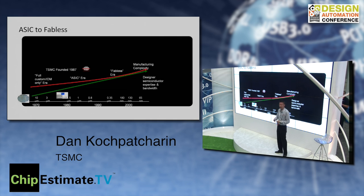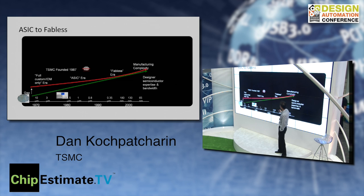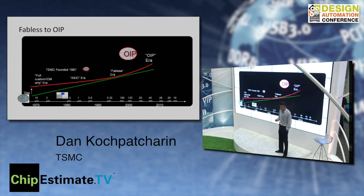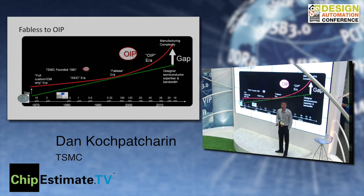You look at the gaps — big gaps required custom design, small gaps you could do yourself. But starting from 40 nanometers, manufacturing complexity got more and more difficult. You have double patterning, 3D extraction, and FinFETs, which are getting more and more difficult at 16 nanometer. This is what we call the OIP era.